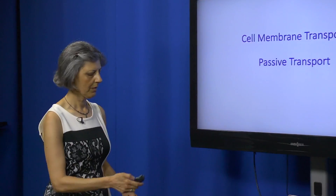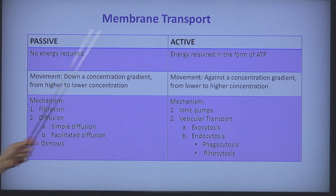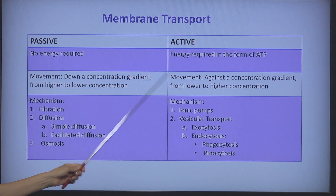Hello and welcome again to one more of our series on physiology concepts. Today we're going to talk about transportation across the plasma membrane. The cell is surrounded by a membrane made up of two layers of phospholipids, and we're going to see how substances are moving in and out across this plasma membrane. There are two ways by which things move in and out of the cell.